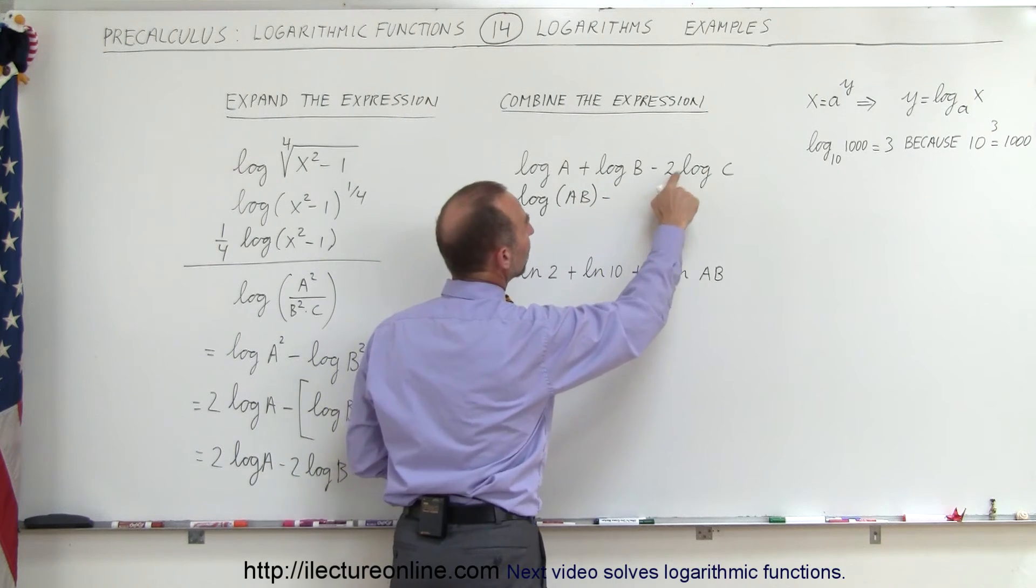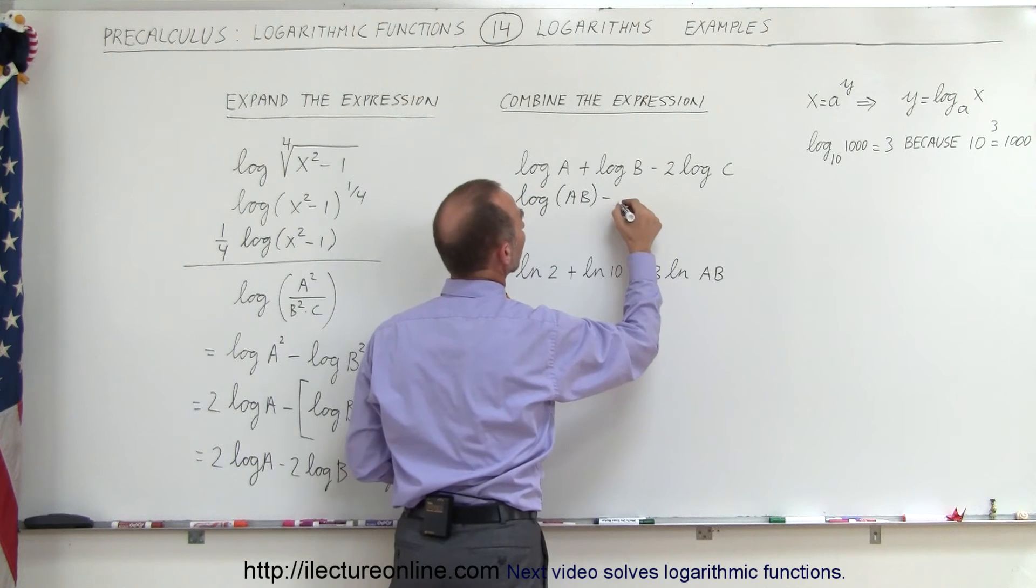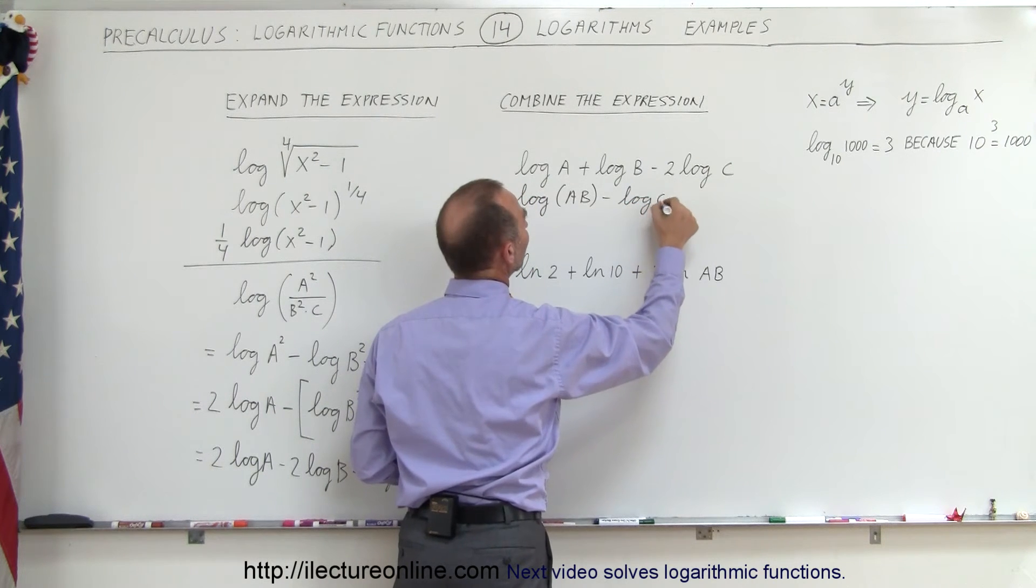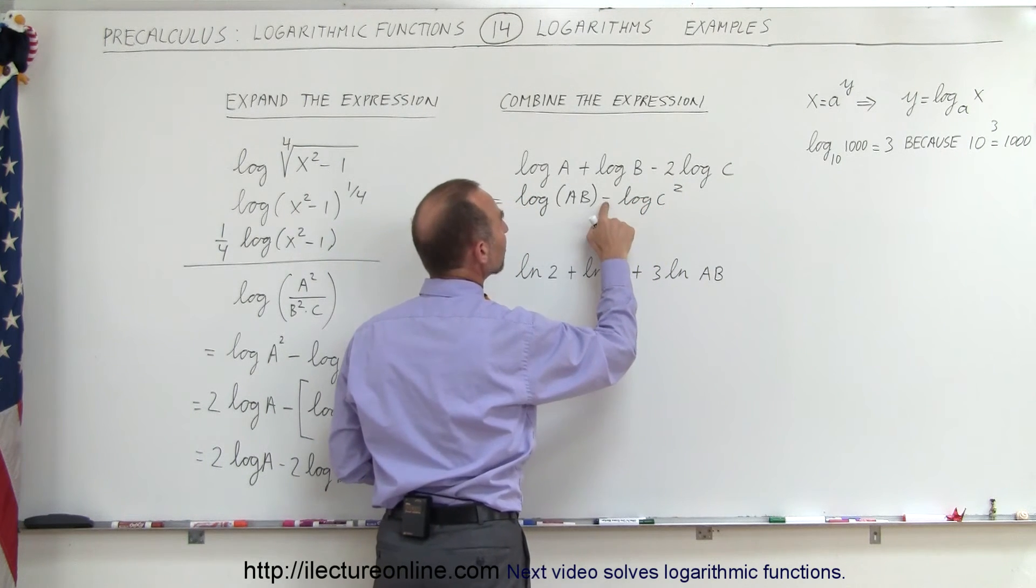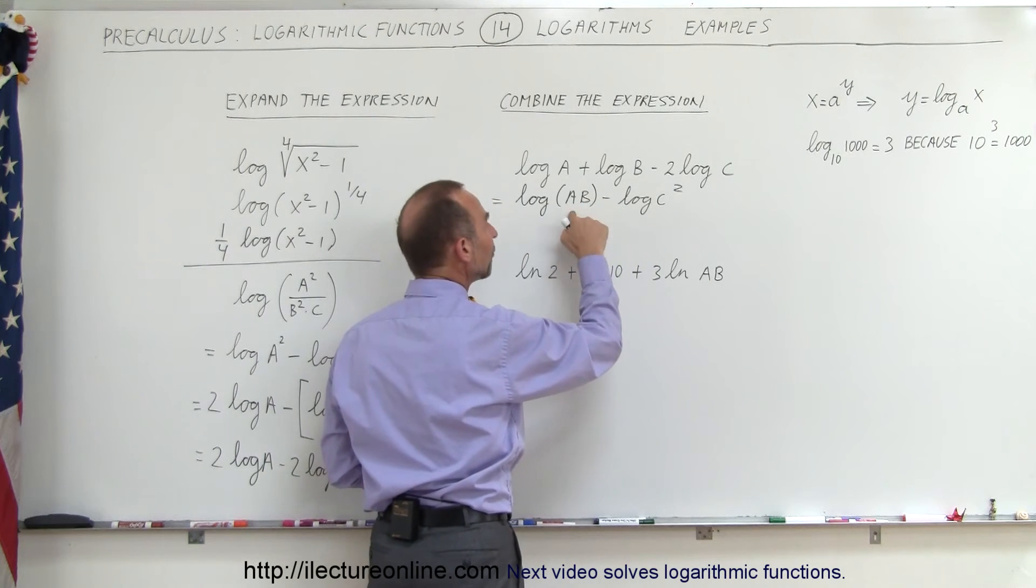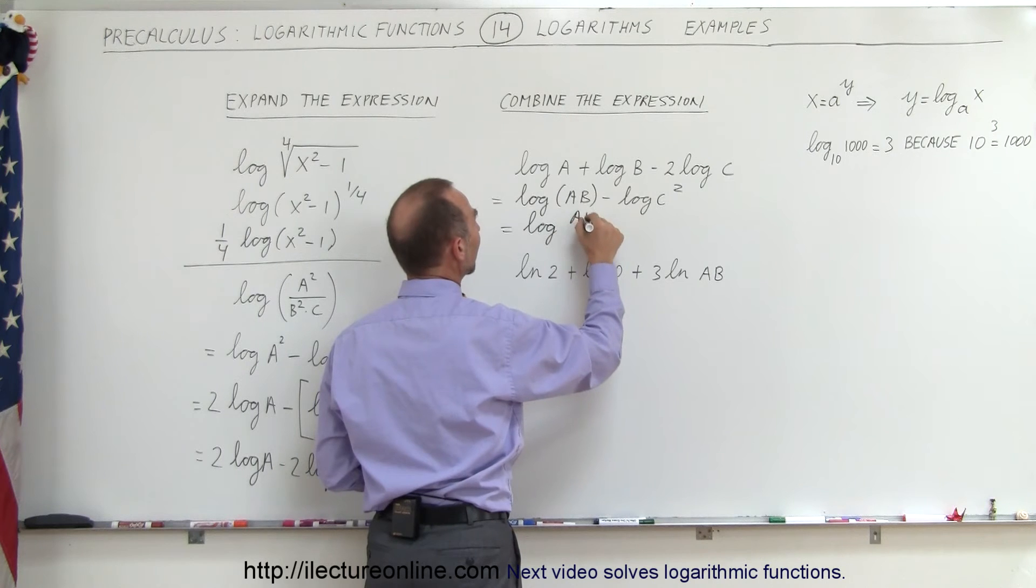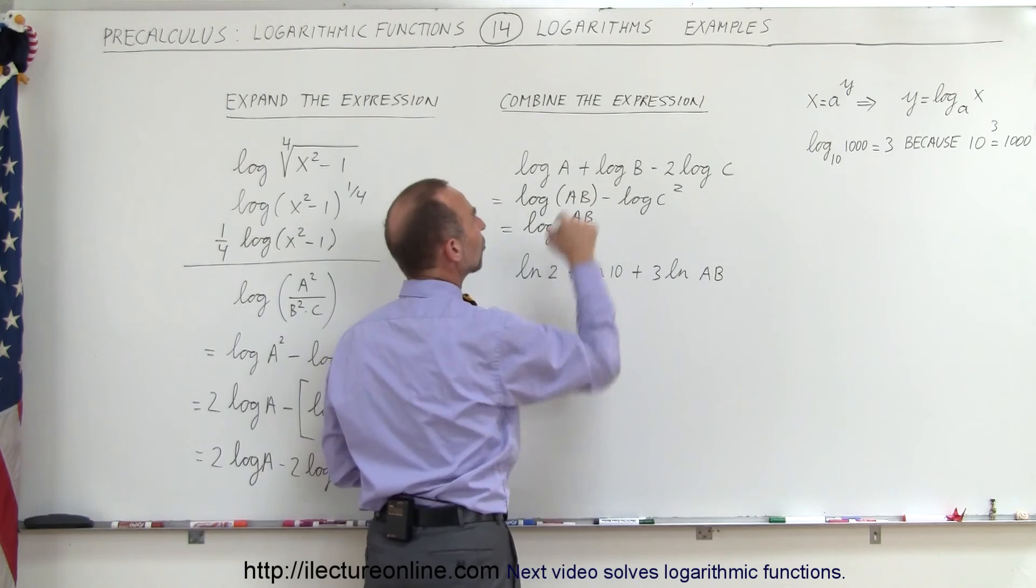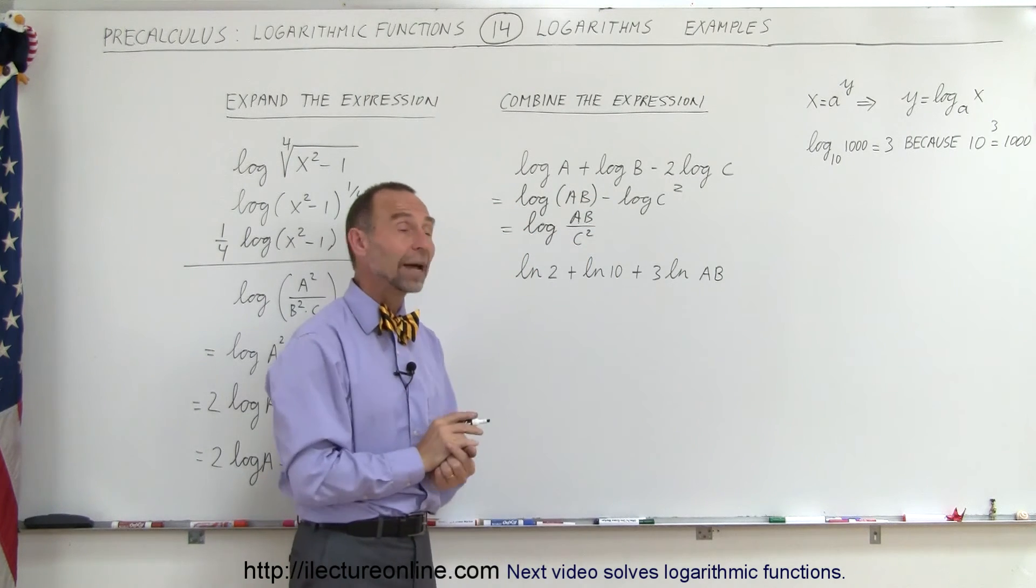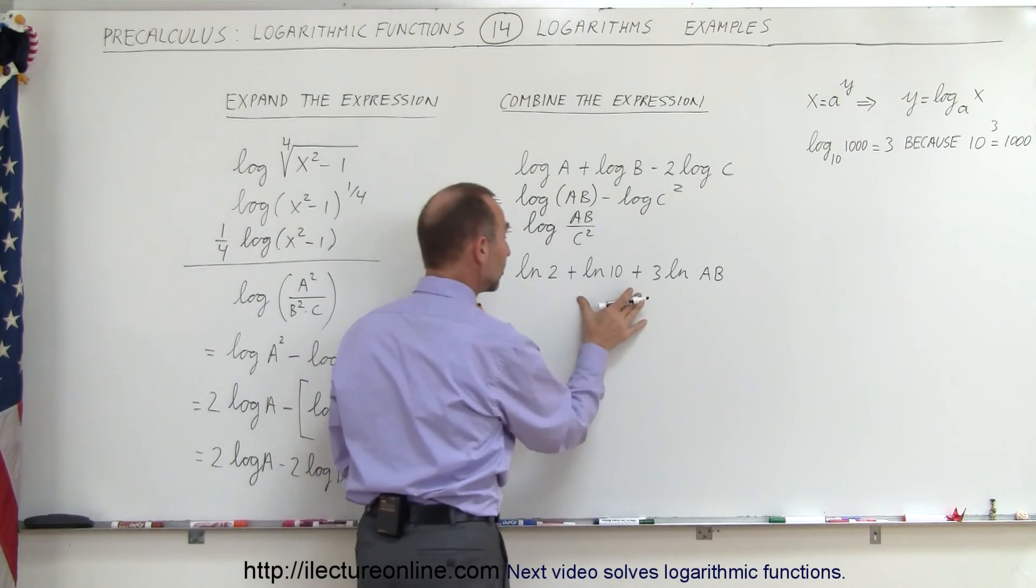Minus, and we take the two and bring it up as an exponent, minus the log of c squared, and then we take this minus and use it as a division when we combine it, so this can be written as the log of a times b divided by c squared, and that would be the combined form of this original equation. You can go back and forth. And finally here we can say,